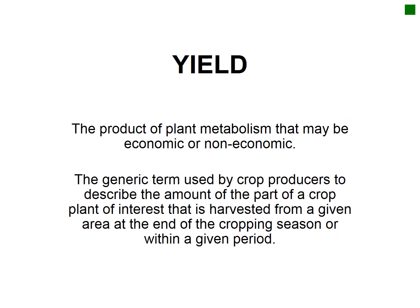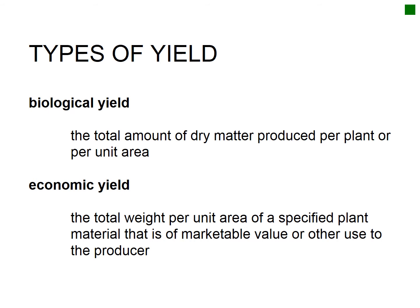There can be both economic and non-economic yield depending on what is being harvested and what portion of the plant is of interest. Yield is often broken down into biological yield — the total dry matter produced per plant per given area — and economic yield, which is the total amount or weight per unit area of a specific plant part that is of marketable value or use to the farmer, returning income.